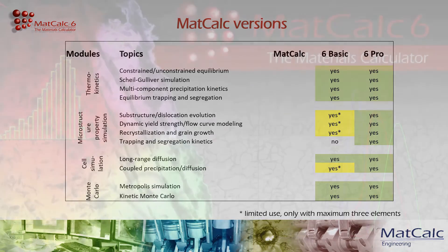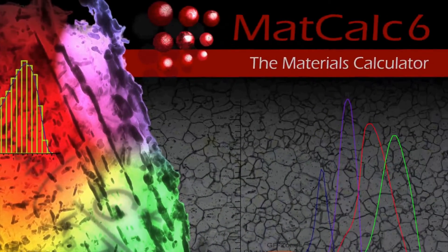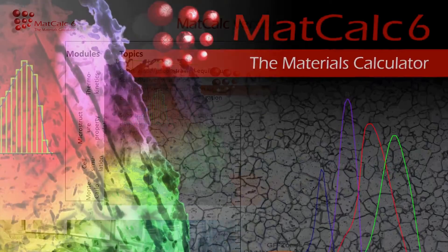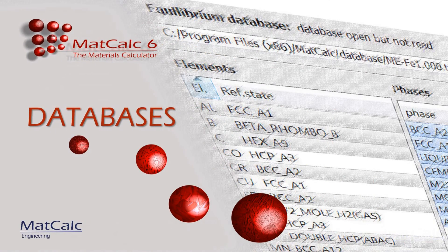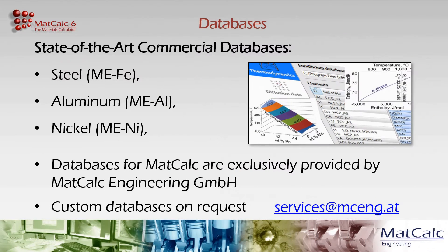With the release of MATCALC 6, metallurgical process engineering and simulation enter a new era. The MATCALC engineering commercial databases are professional state-of-the-art thermodynamic, diffusion, and thermophysical databases for steel, aluminum, and nickel. We can also tailor multi-component, multi-phase special databases to your specific needs. Ask our service department for details.